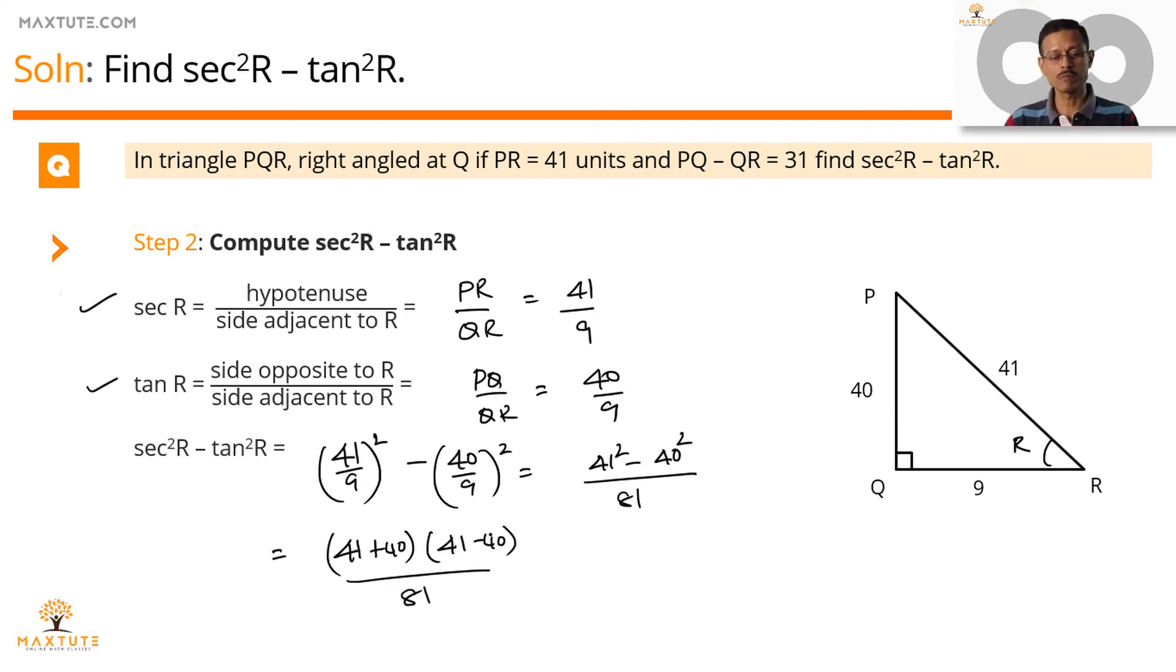So we can ignore it when you're multiplying it. 41 plus 40 is equal to 81. 81 by 81 is equal to 1. So the value of secant square R minus tan square R is equal to 1.